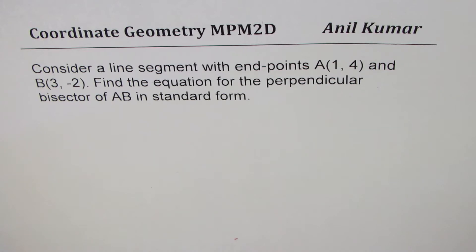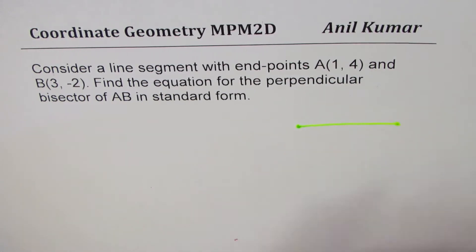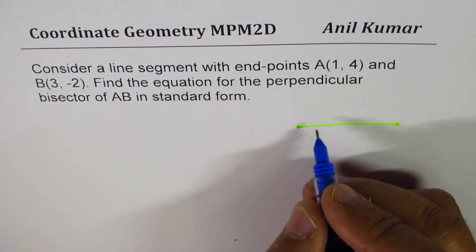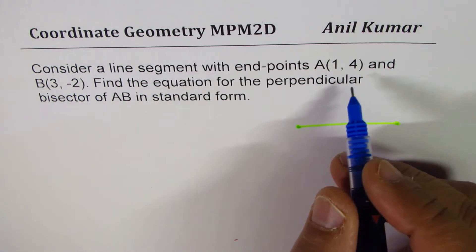So, let's consider a line. Let's say this is our line AB. Just draw any line. You don't have to really put the coordinates as it is.